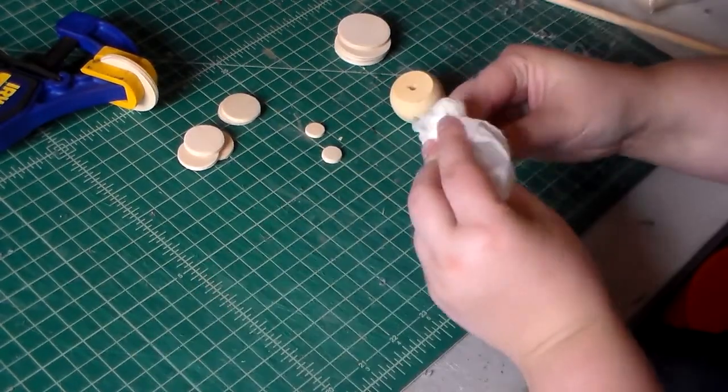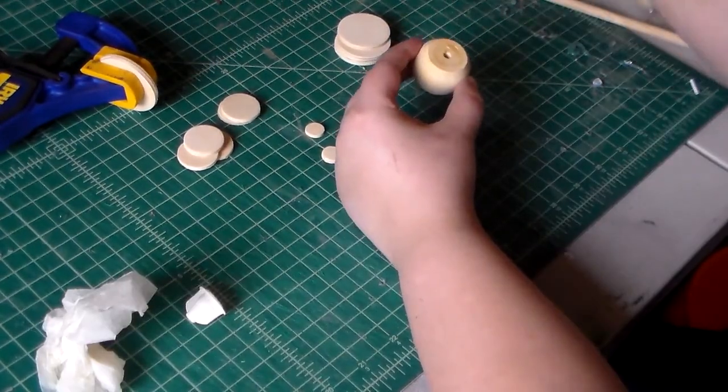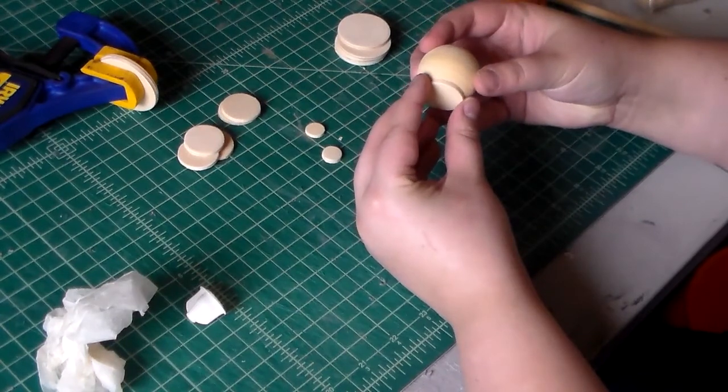Since the wooden knob was too flat on one side for my liking, I glued a 1 inch disc to the bottom and used a clamp to hold the pieces together.